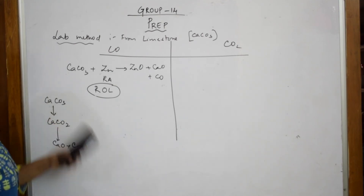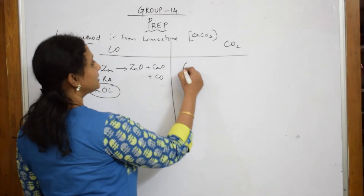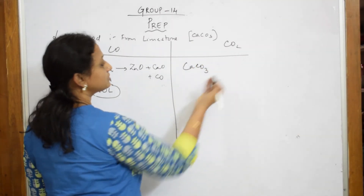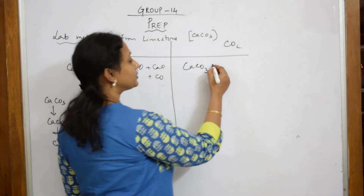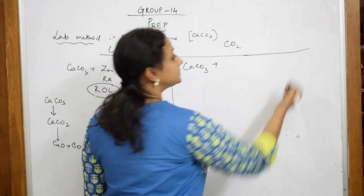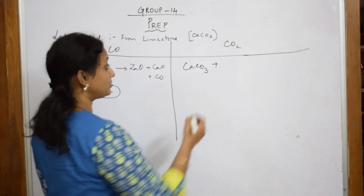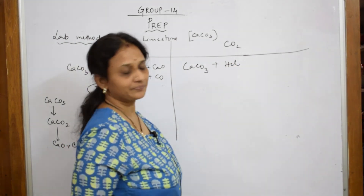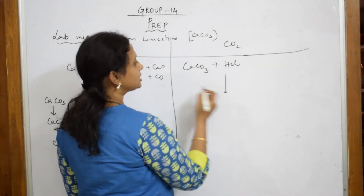Now from this limestone, let us do the next reaction — that is preparation of carbon dioxide from calcium carbonate. Here, instead of a reducing agent, I am going to use an acid. I am going to add HCl to this. When I add HCl to this, just observe.